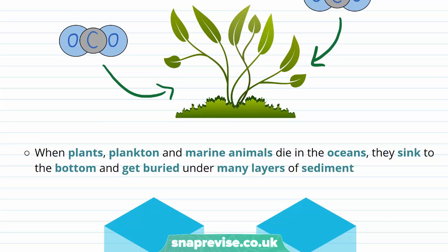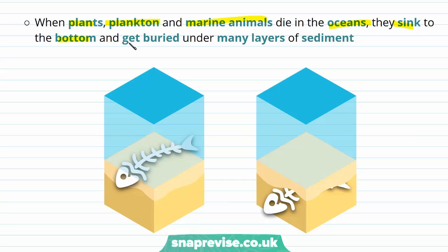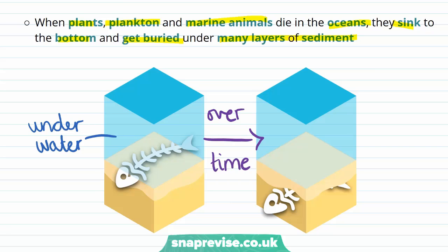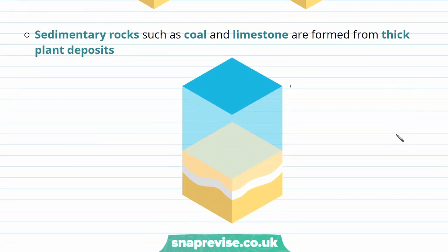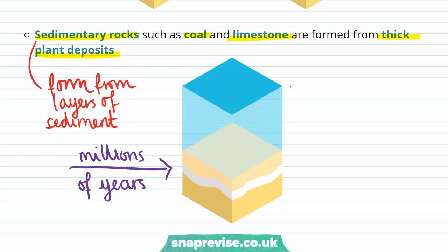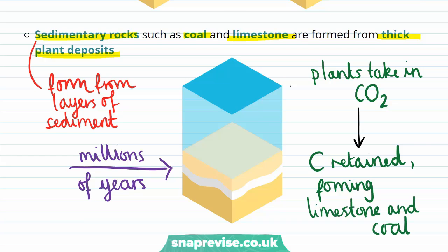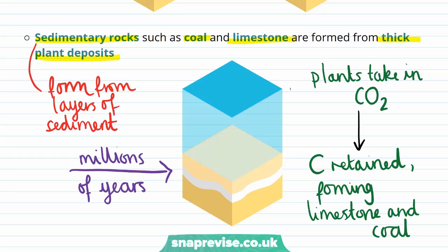Carbon dioxide taken in by plants millions of years ago has led to the formation of limestone. When plants, plankton, or marine animals die in the oceans they sink to the bottom and get buried under many layers of sediment. Over millions of years we can form sedimentary rocks, with coal and limestone forming from thick plant deposits. Plants took in carbon dioxide during their lifetime; the carbon from this CO2 is retained, forming rocks such as limestone and coal — coal contains carbon, and limestone contains both carbon and oxygen. Therefore, carbon dioxide previously in the atmosphere now forms some of the rocks we see today.